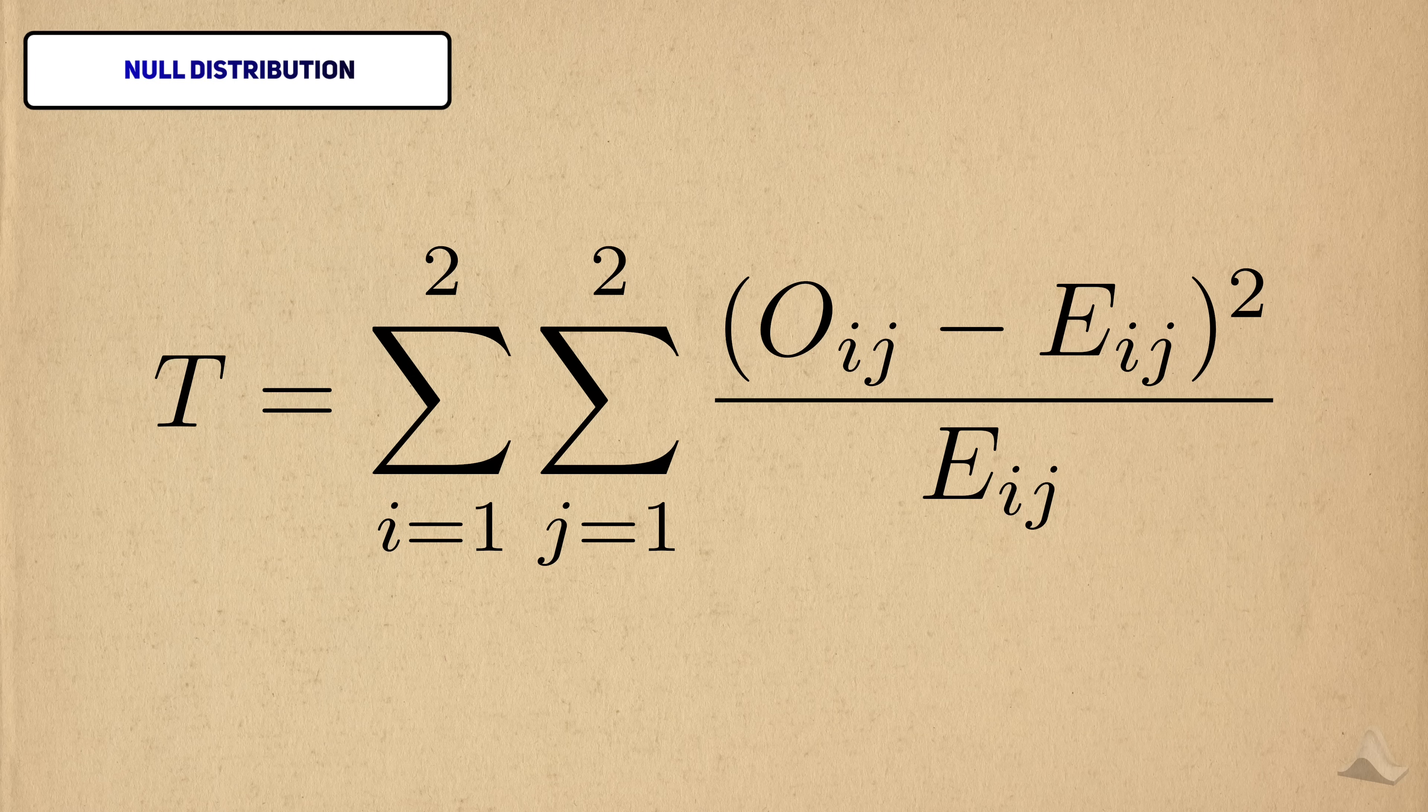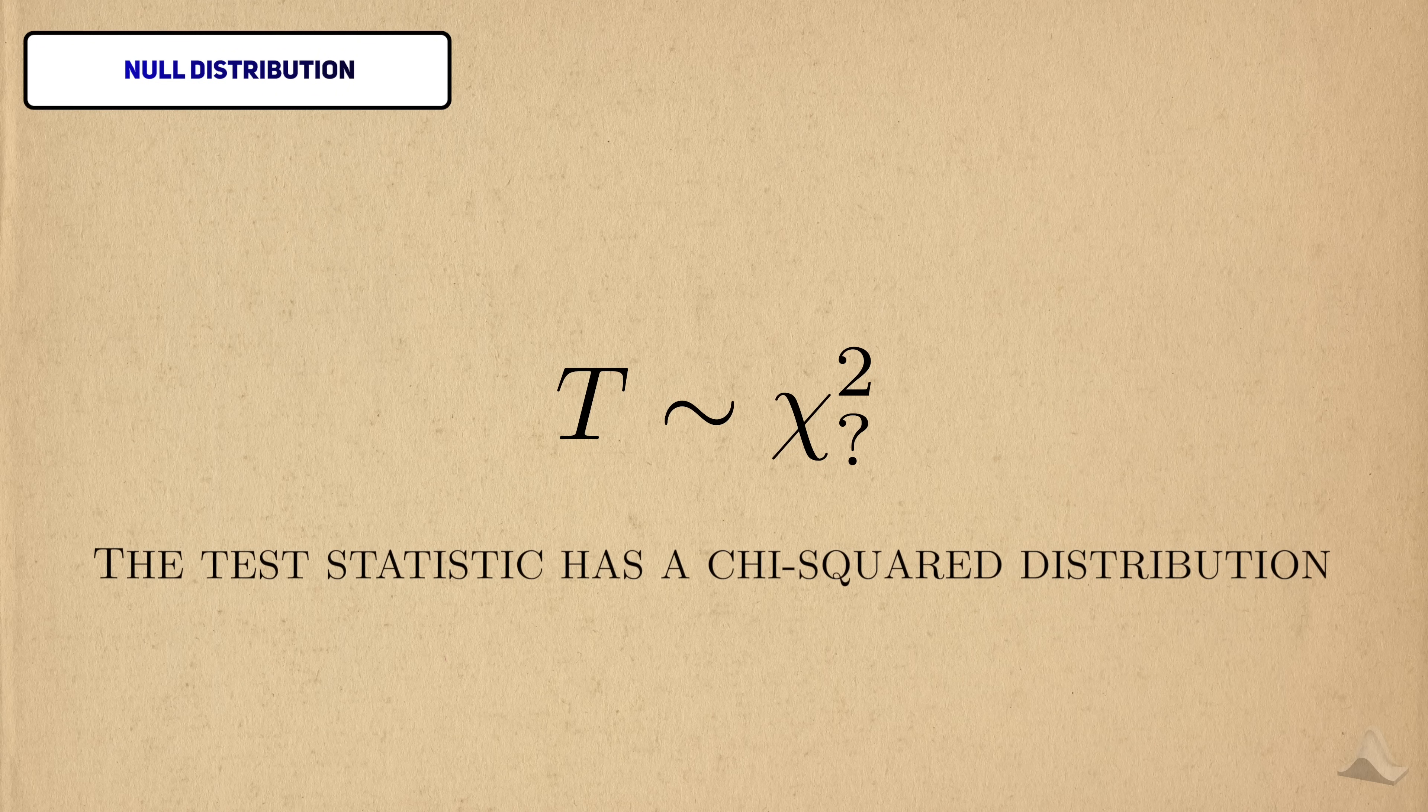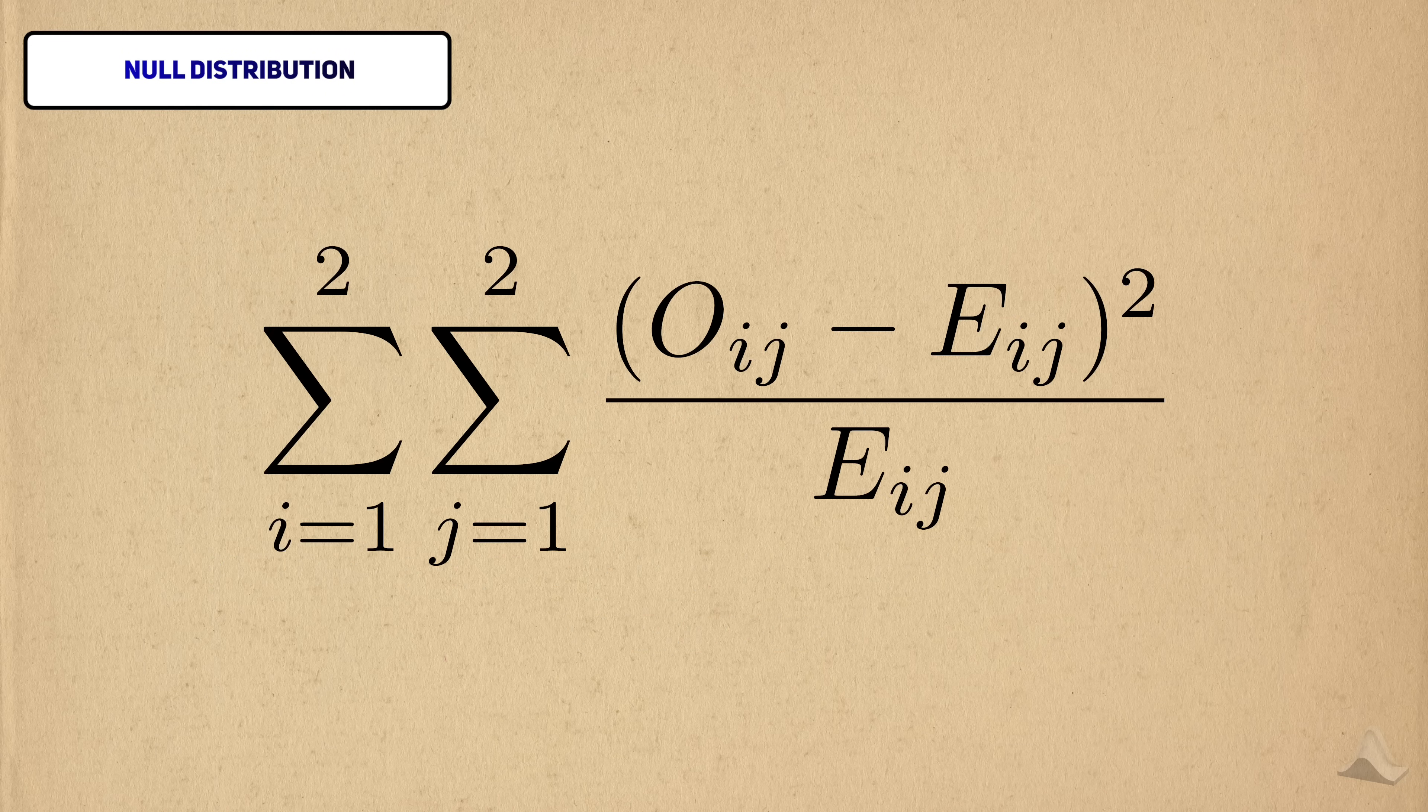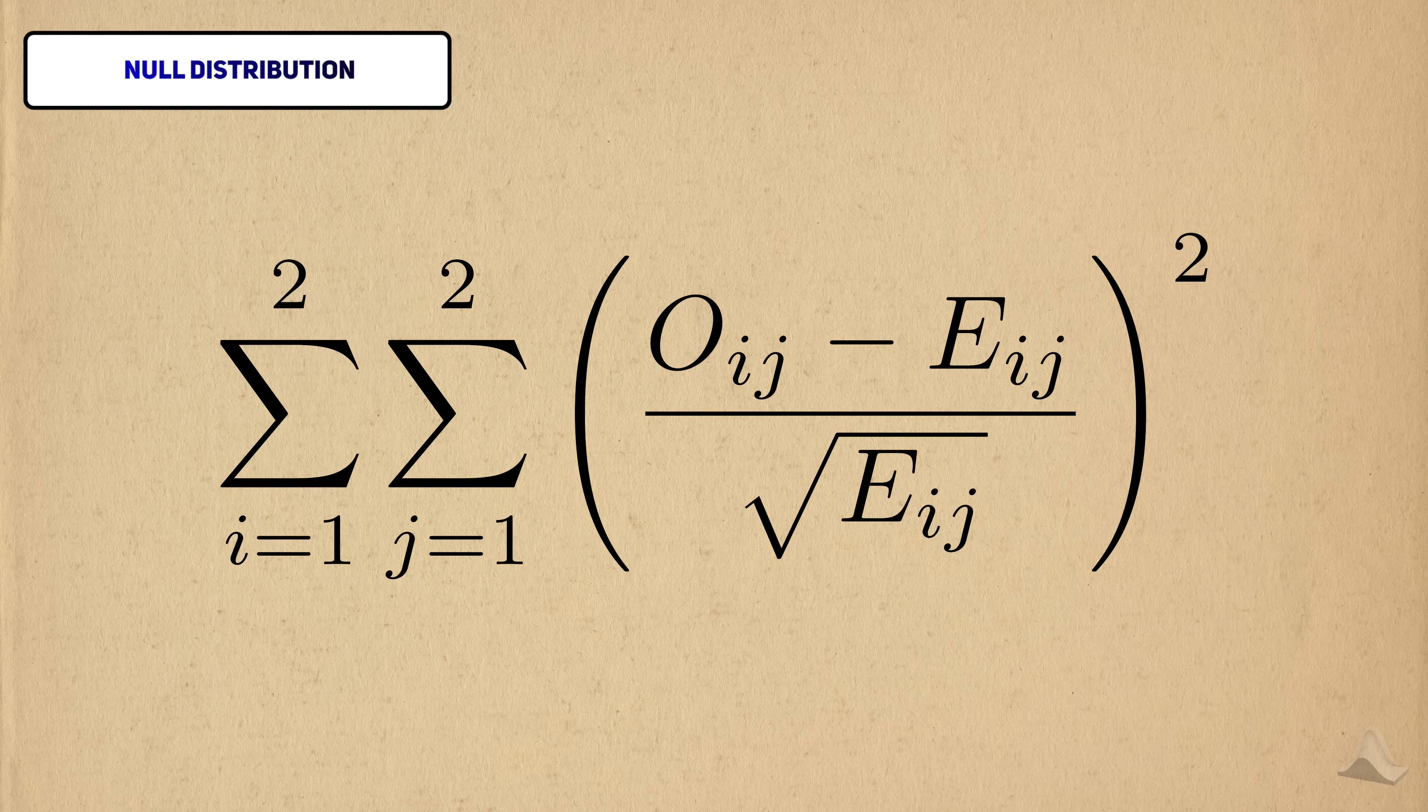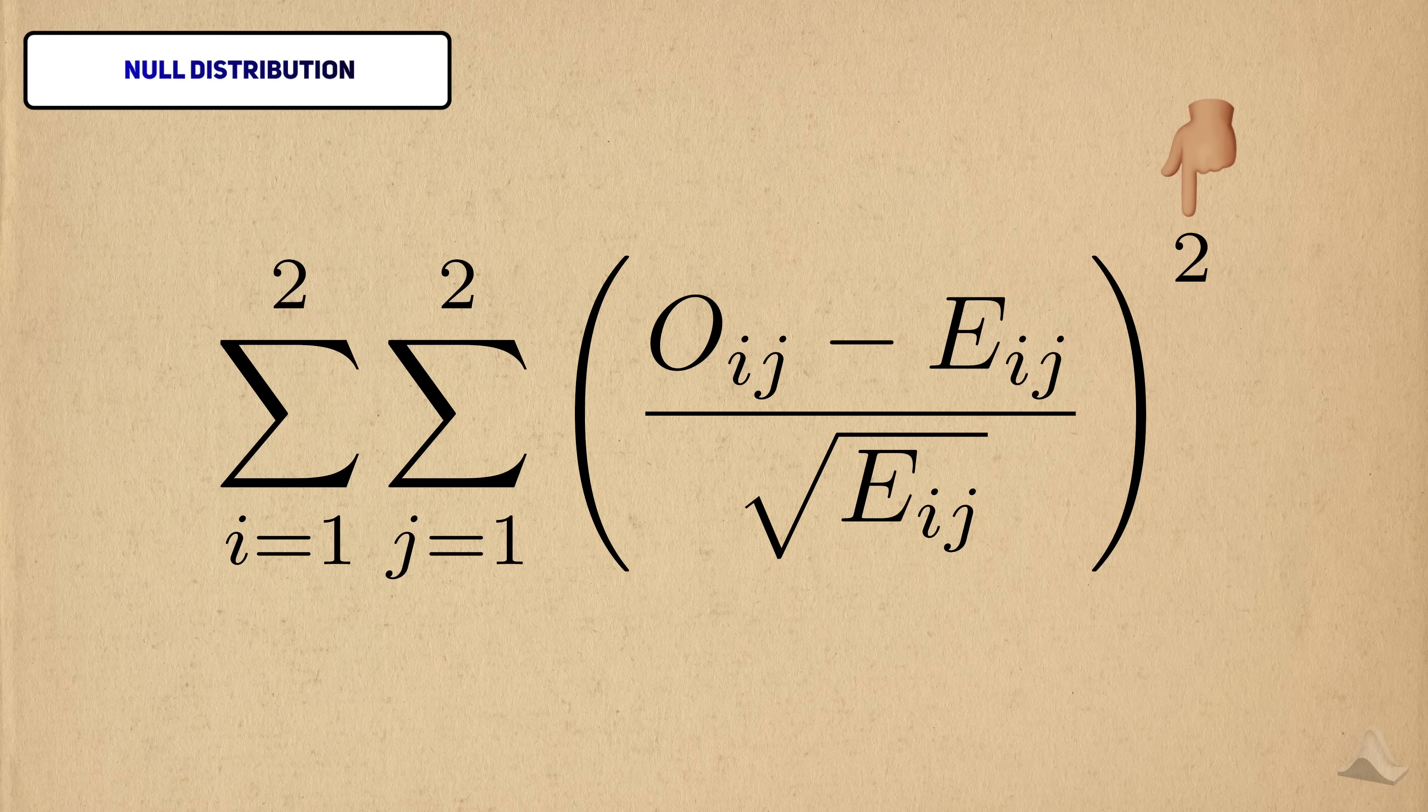The last thing we need for the chi-squared test is the distribution of this test statistic under the null. This may come as a surprise to you, but this statistic has a chi-squared distribution. To understand why this is the case, let me rewrite the statistic with a small change. I've just taken the exponent and applied it to both the numerator and the denominator.